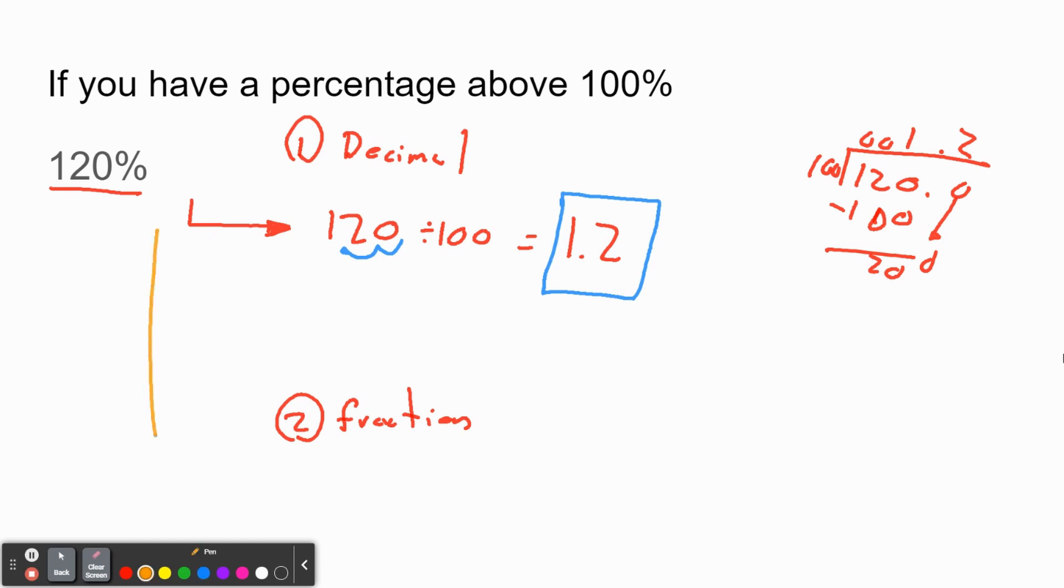As for doing this with a fraction, again, it's not really going to be anything different than what we already have done. You're going to make your percentage the numerator of a fraction. The bottom is going to be 100. And then you do have to simplify. So you'd have 12 tenths, which you could simplify to 6 fifths. You could write this as a mixed number if you wanted to, but if you leave it as an improper fraction, that is totally fine. If you want to go for 6 fifths instead of 1 and 1 fifth, that's fine. There's nothing wrong with that. You do just need to make sure that you simplify it.